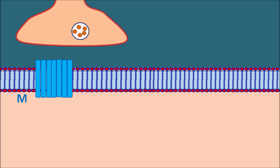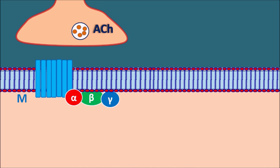These muscarinic receptors are G protein-coupled receptors which are coupled with three subunits: alpha, beta, and gamma. The acetylcholine stored in the presynaptic nerve terminals can be released and act on the muscarinic receptors. When the action potential reaches the nerve terminal, calcium-mediated exocytosis takes place, where acetylcholine is released and acts on the muscarinic receptors.